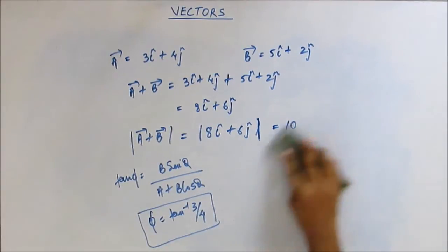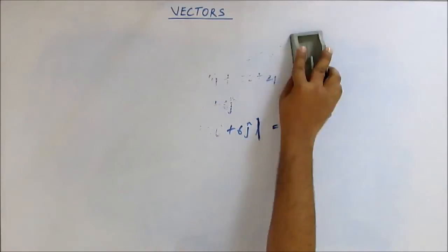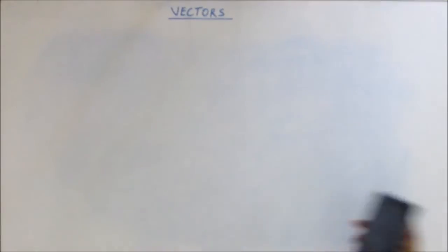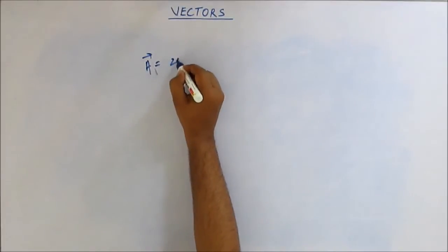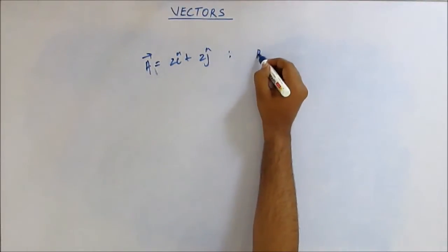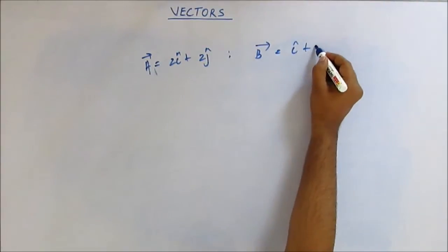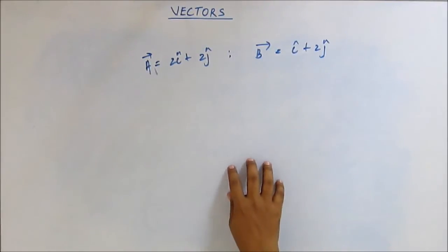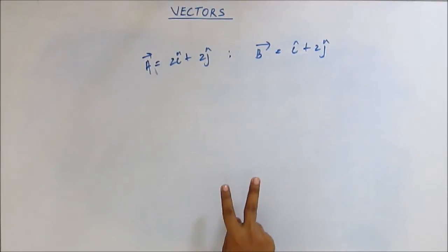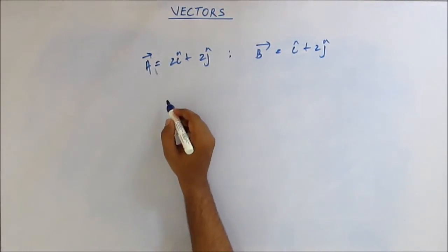We are learning vectors and it's pretty simple — not much hectic calculation, at least for now. I'm giving you another pair of vectors: suppose vector A equals 2i-cap plus 2j-cap and vector B equals i-cap plus 2j-cap. Quickly find the magnitude of A plus B and the angle which that resultant vector makes with the x-axis. Take a pen and paper and solve this.